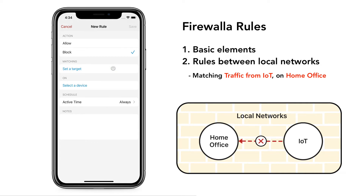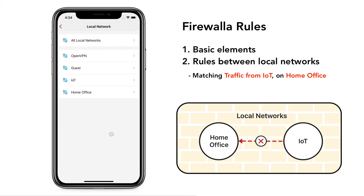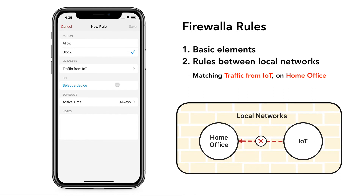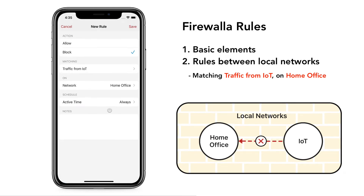When choosing a target, select Local Network. We can select the IoT network as the traffic source and apply the rule to the home office network.